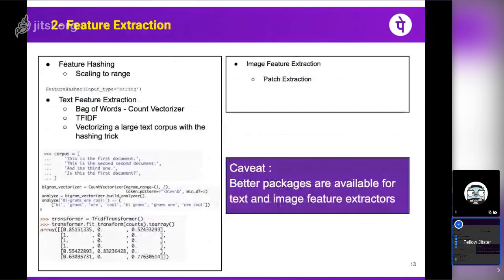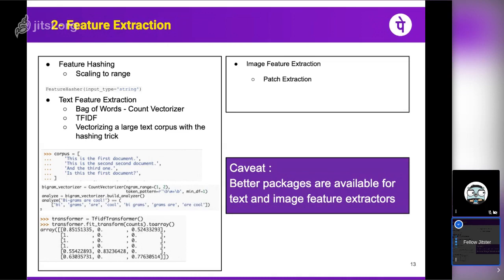Feature extraction is another processing step. Feature hashing is important when you have too many categories in a single column — for example, zip codes in user data. One-hot encoding is not recommended in that case because it increases dimensionality too much. Instead, feature hashing uses the MurmurHash3 algorithm to map high-cardinality categorical data into lower dimensions using the hashing trick.